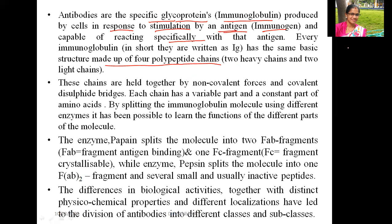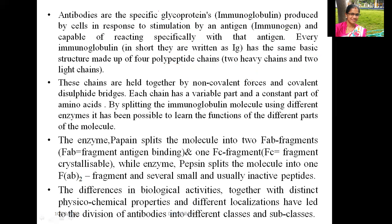In all five immunoglobulins, you will observe the same basic structure with four polypeptide chains — two heavy chains and two light chains. These chains are held together by non-covalent forces and covalent disulfide bridges, including interdisulfide bonds between the heavy chains.